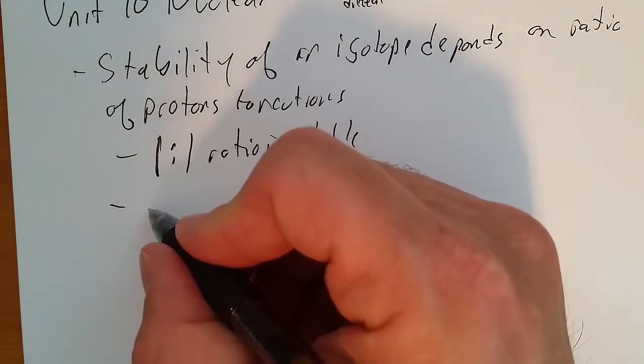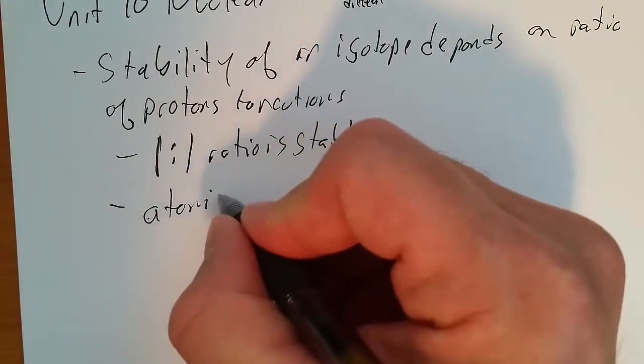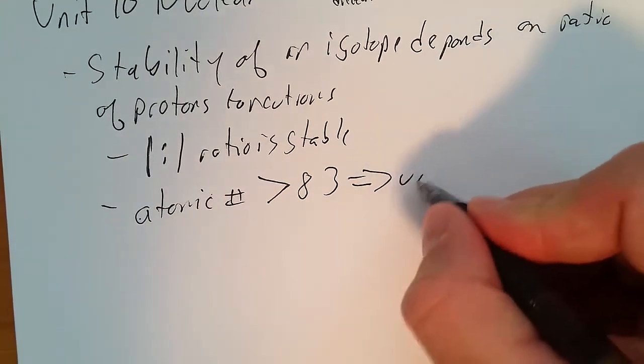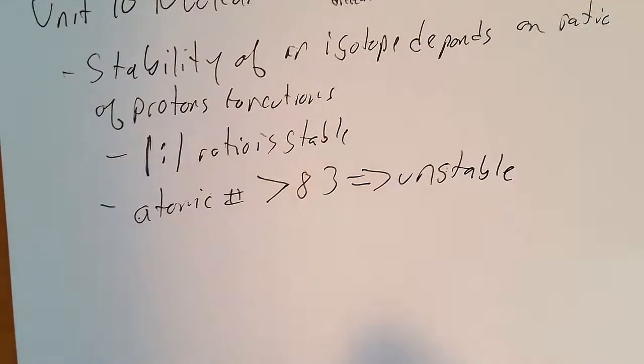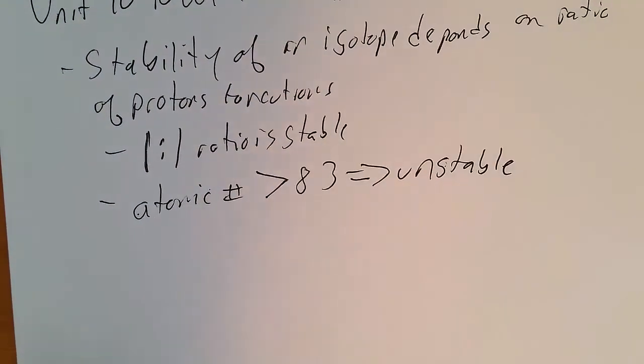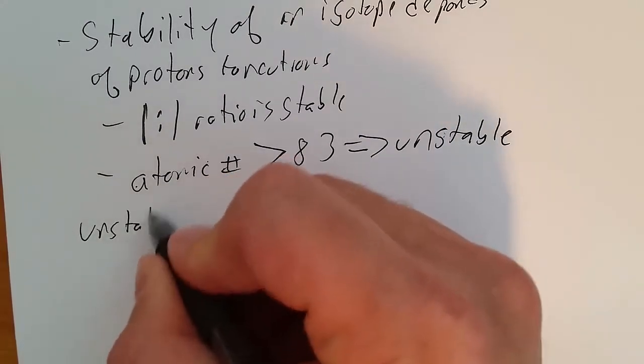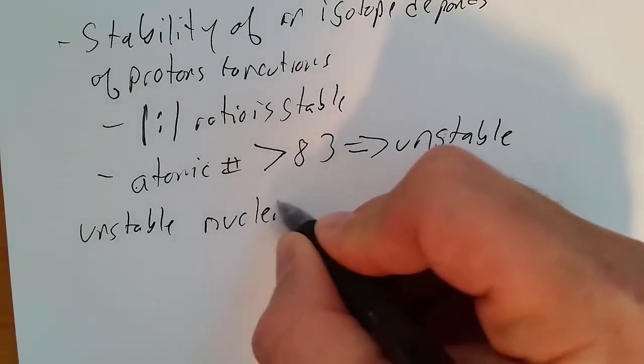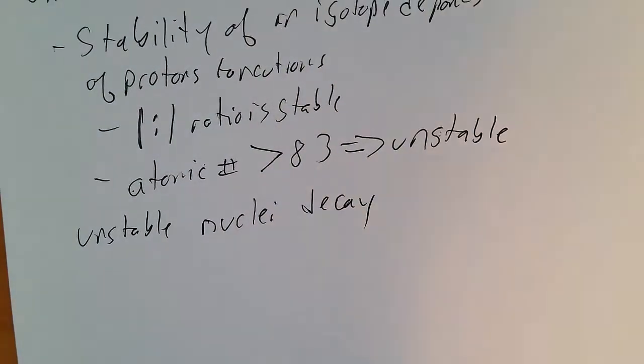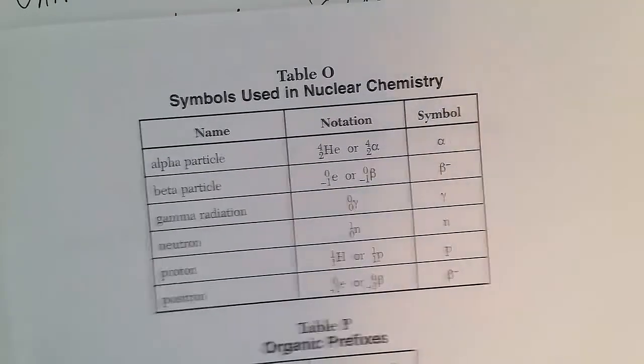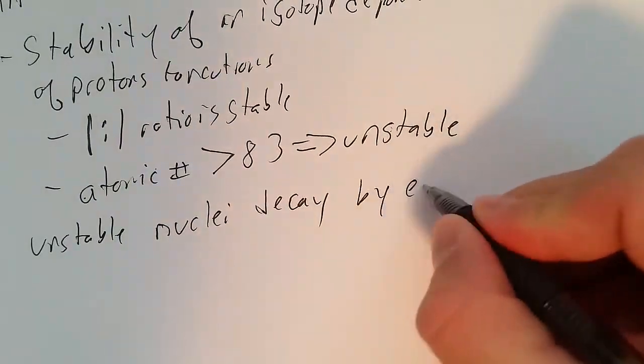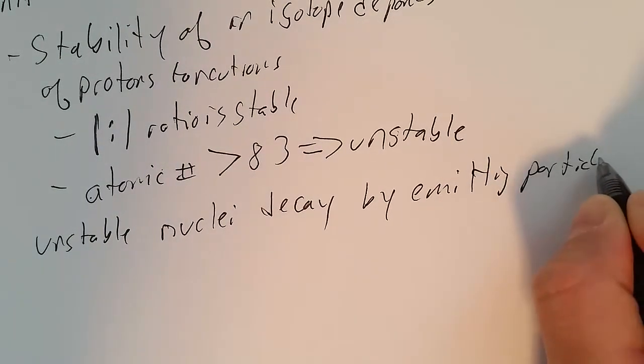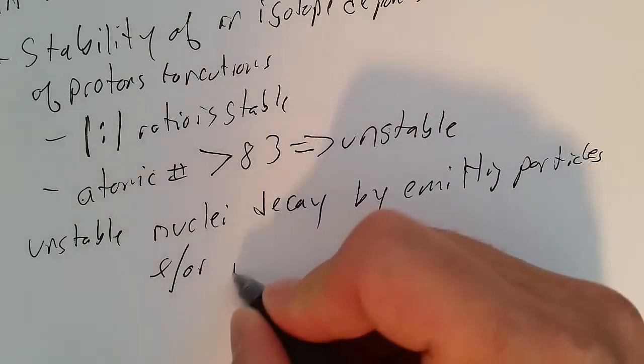All elements greater than atomic number 83 will be unstable. These unstable nuclei decay by different types of decay, usually by emitting particles and or radiation.